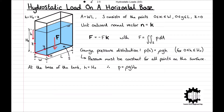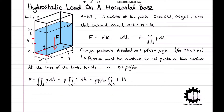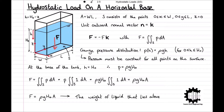For a planar surface that is horizontal, the pressure must be constant at all points on the surface as the hydrostatic pressure does not vary in any horizontal direction. As the tank's base is located at H equals H0, we can rewrite the gauge pressure as P equals rho·G·H0, and this applies for all points on S. Therefore, as P is constant we can factor it out of the integral, giving F equals rho·G·H0·A, which is simply the weight of the liquid that lies above the surface S.